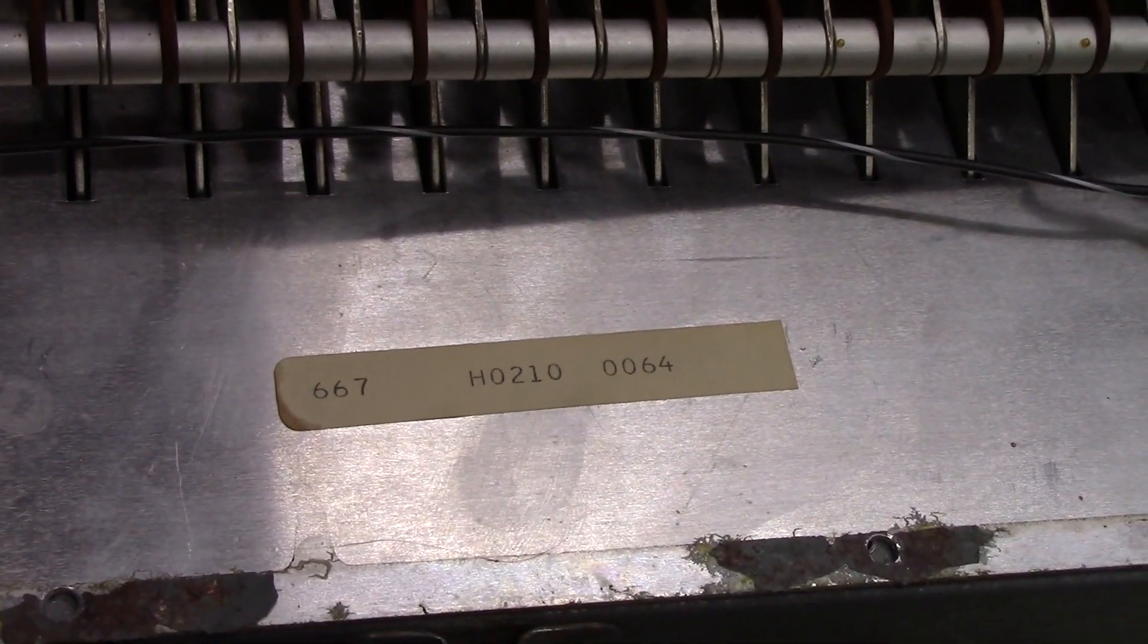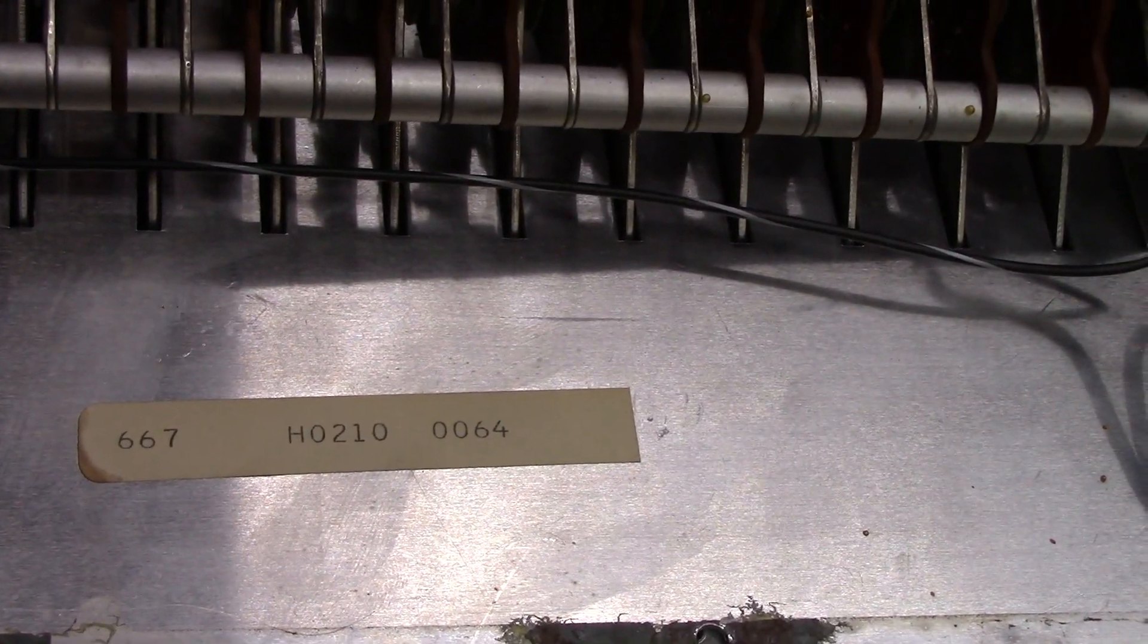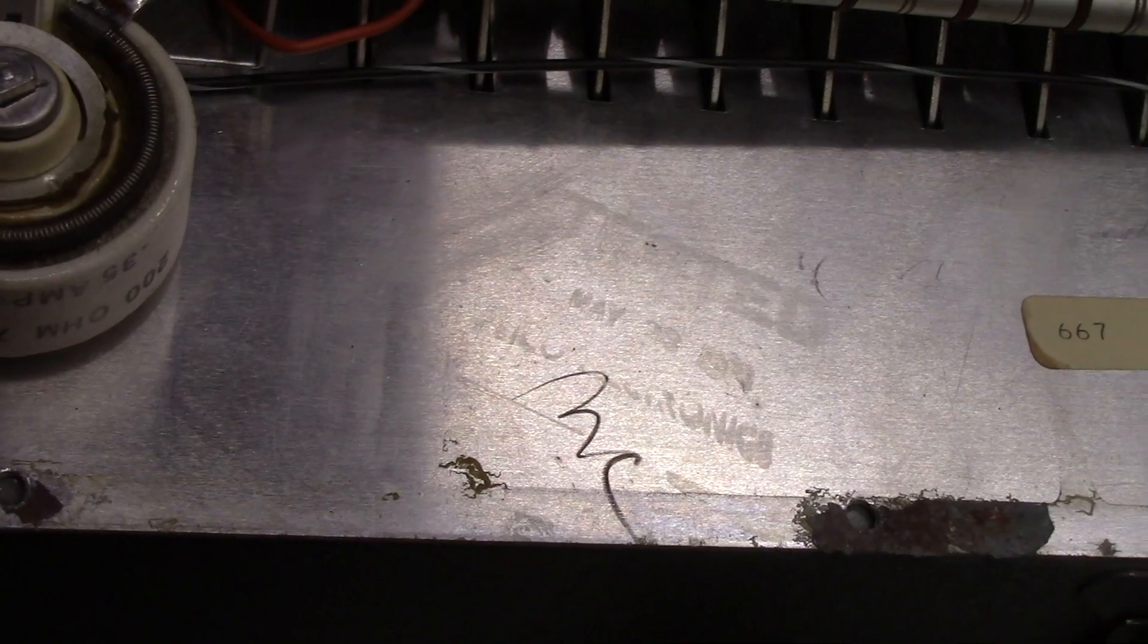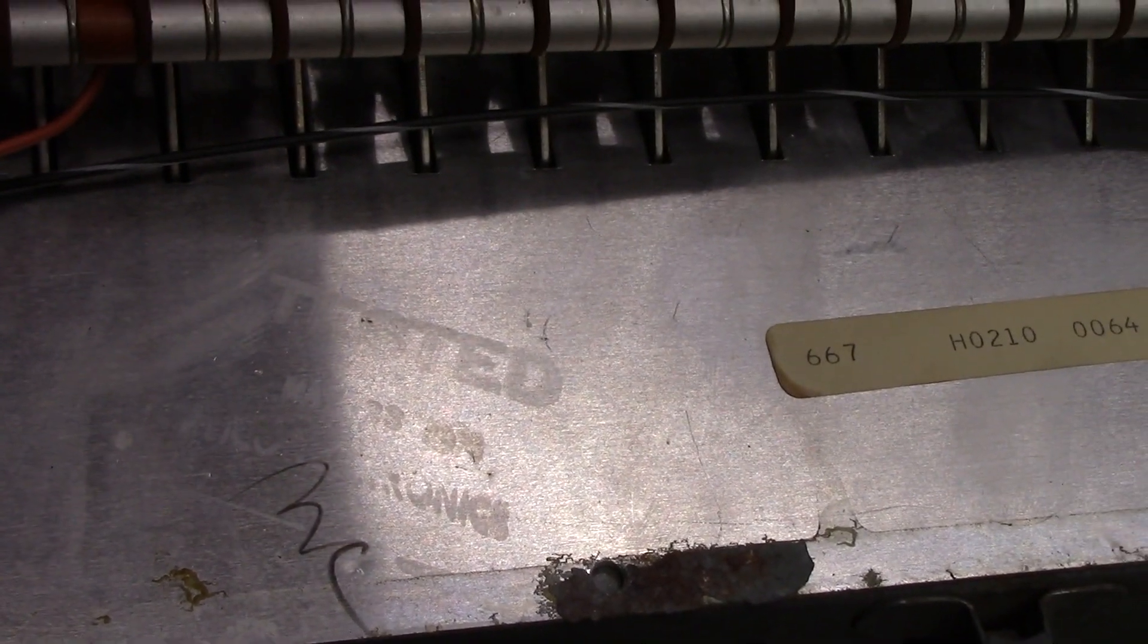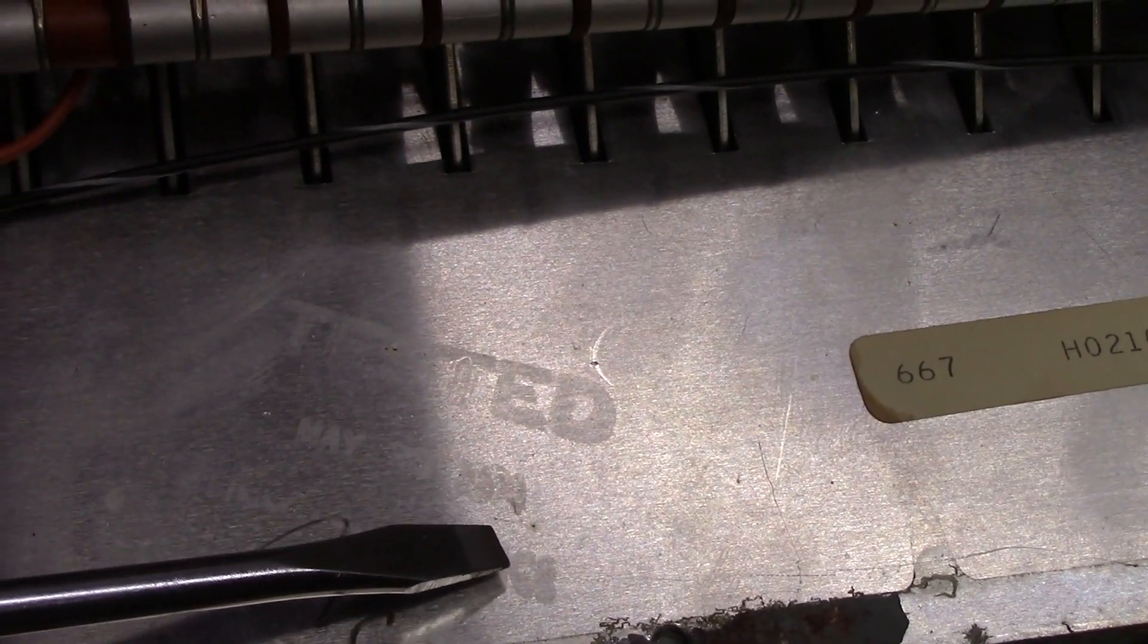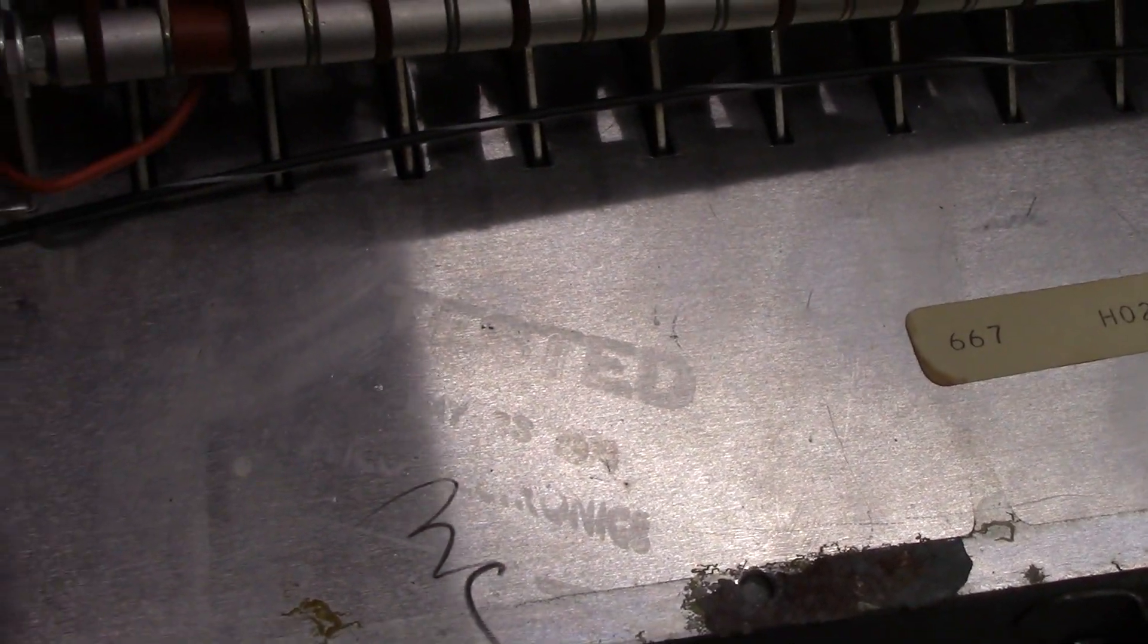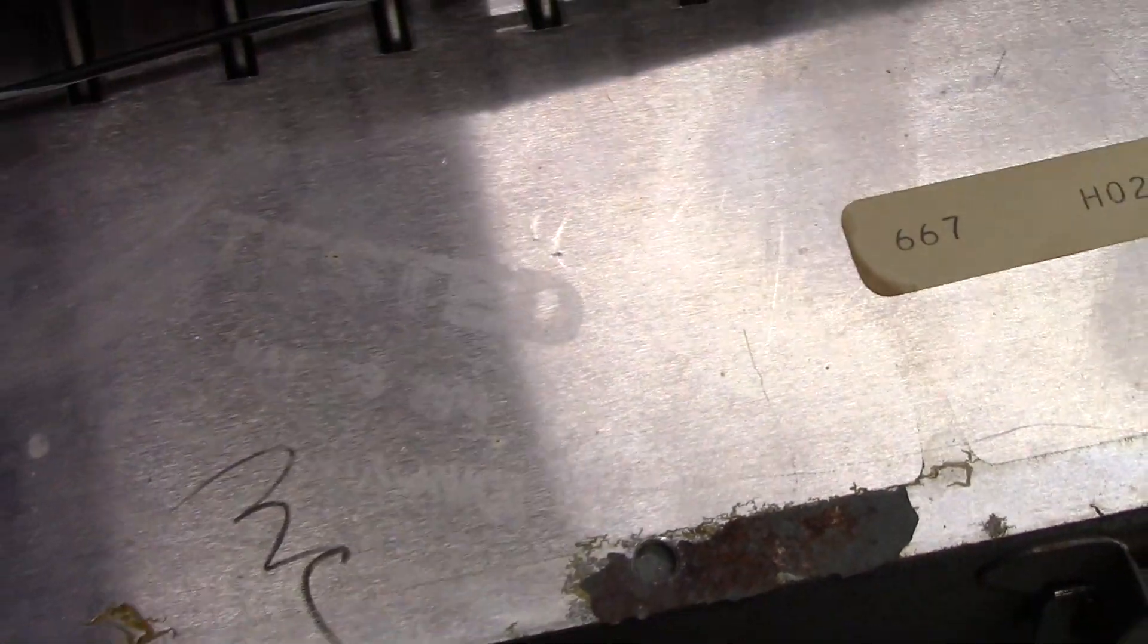We have a sticker here. It says model 667 and then some other codes that I don't understand what they are. And look at this, there is a stamp that says tested May 23rd 1973 or 4. I think that's a 4. Tested May 23, 1974, it's a bit smeared. And then it says ICO Electronics. So there we go, it's definitely a factory unit.